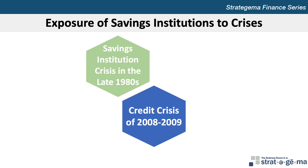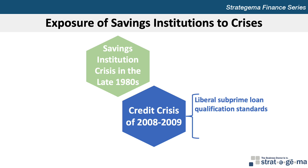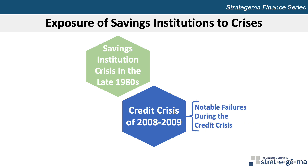During the 2003-2006 period of strong economic growth, some SIs used very liberal standards when offering subprime mortgage loans to borrowers who didn't qualify for conventional mortgages. Many SIs invested heavily in mortgage-backed securities without recognizing the potential credit risk, and subsequently incurred losses due to late payments or defaults. The financial problems of SIs were highlighted by several large failures, including Countrywide Financial, the second-largest SI in the U.S., IndyMac, the eighth-largest, and Washington Mutual, the largest savings institution.